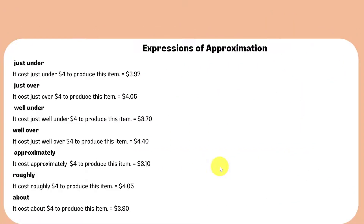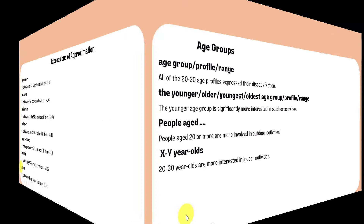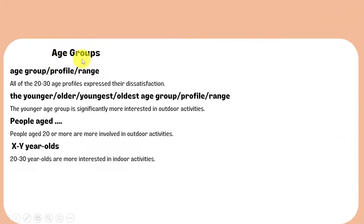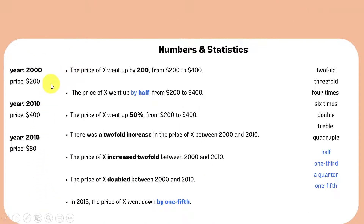You can use the following expressions to show approximate numbers and make your description more interesting. Graphs frequently use age groups to break down a total amount, and in such cases the following expressions can be used to avoid repetition. Here are different ways of expressing the price of X and changes in price.